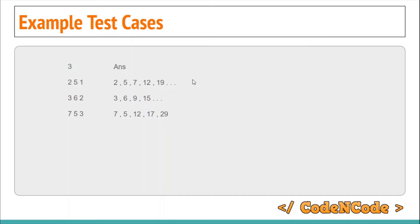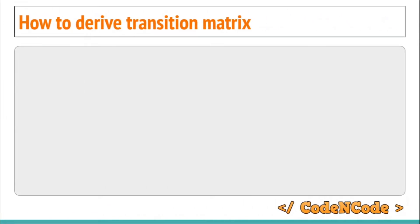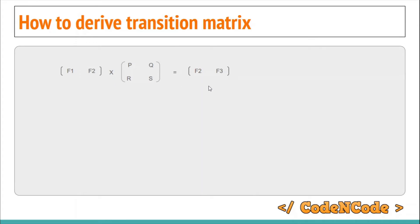As you already know from the matrix exponentiation lecture, we can calculate the nth term of a recurrence relation in O(log n) time. The first thing is to find the transition matrix. We have a row matrix of base terms f1 and f2. If we multiply it with the transition matrix, the result is [f2, f3] — the next terms.